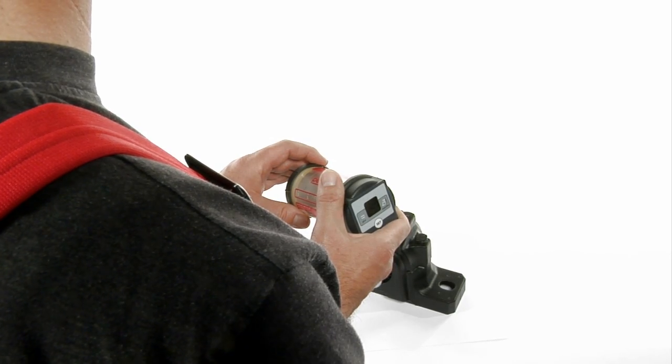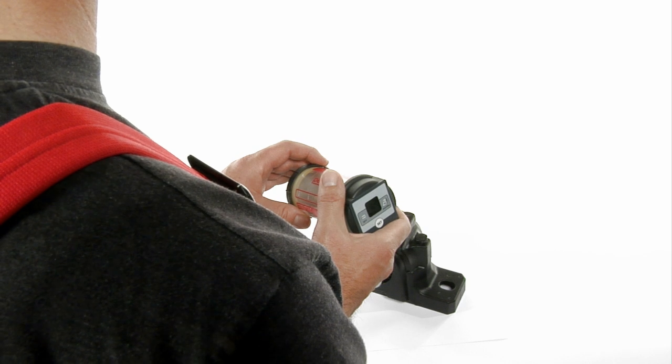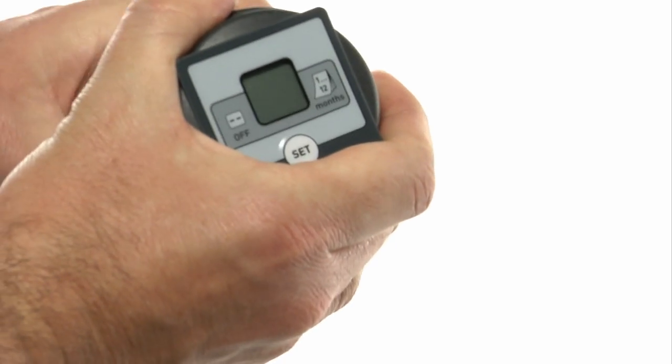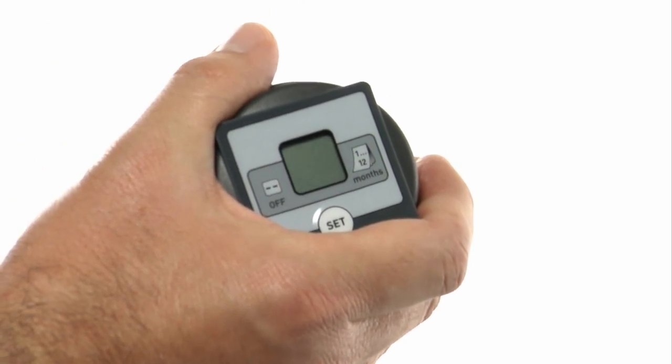Unscrew the control unit from the MTLC unit, turning it counterclockwise. The control unit will automatically shut off. All settings are saved.